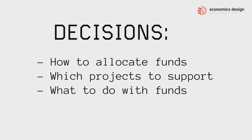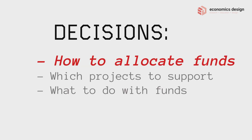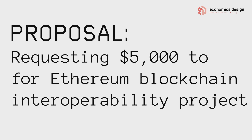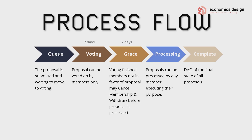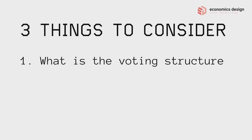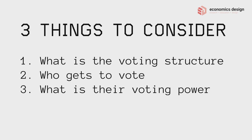Decisions can be different. These decisions will be told to smart contracts with programmable rules. Let's take the example of how to allocate funds. In a board of directors or senate, you submit a proposal — let's say the proposal is to give $5,000 to fund a project to allow for interoperability with the Ethereum blockchain. You submit this proposal to the DAO, and the DAO will then vote on it — yes or no. There are three things to consider: what is the voting structure like — static or continuous vote? Who gets to vote — proxy vote, any user, users with specific tokens, users with a minimum token threshold? And what is their voting power — one vote per address, one vote per token, voting based on reputation, or voting power based on the percentage of tokens held.